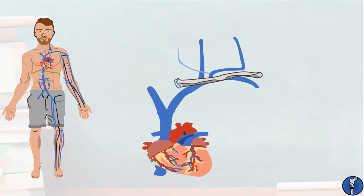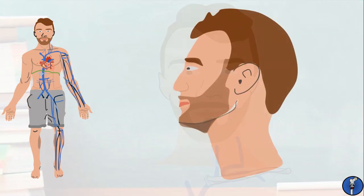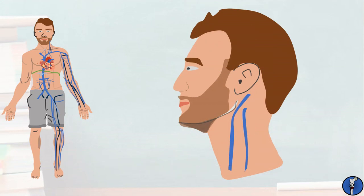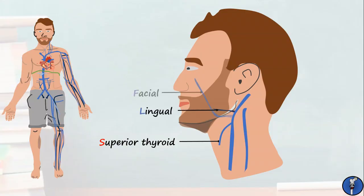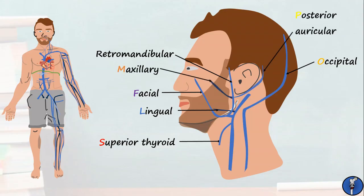Let's finish by following the veins which drain the head and neck — these are best viewed from the side. First we have the internal and external jugular veins which drain into the subclavian. The internal jugular receives blood from the superior thyroid, lingual and facial veins. The external jugular receives blood from the occipital vein. From the internal jugular comes the retromandibular vein which runs around the back of the mandible. This receives blood from the posterior auricular, maxillary and superficial temporal veins.